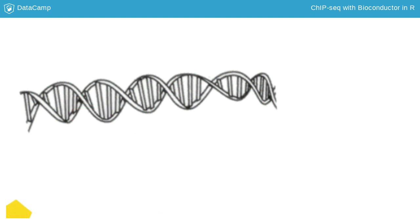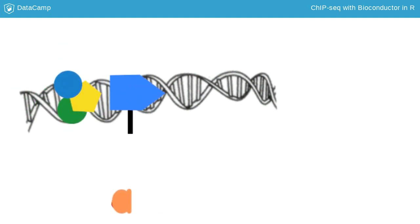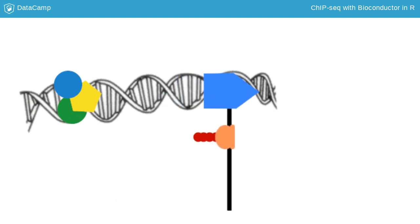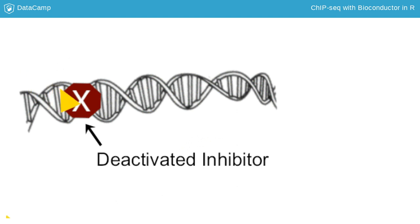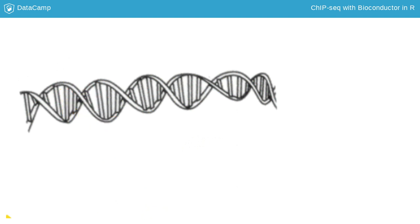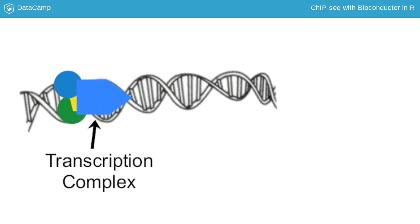Inside each cell, a complex machinery of proteins is responsible for ensuring that the right genes are translated into proteins. Inhibitors are proteins that bind to DNA to deactivate specific genes. Such inhibitors have to be removed through the interaction with other proteins before genes can be expressed. A complex of activating transcription factors can then bind to the DNA, allowing gene expression to proceed.